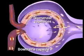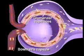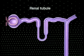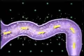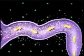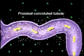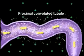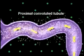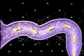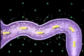The filtrate is captured within a chamber called Bowman's capsule. The next nephron section, the renal tubule, has three parts in series. Filtrate within Bowman's capsule enters the proximal convoluted tubule, where reabsorption of important molecules and ions from filtrate back into blood occurs.